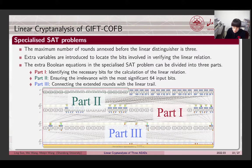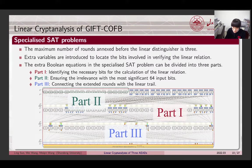We create a specialized SAT problem targeting the conditional linear trail. To begin with, given that GIFT-128 achieves full diffusion after 4 rounds, we conjecture the maximum number of rounds appended before the linear distinguisher in the attack is 3. Regarding the 3 rounds extended before the linear approximation, we introduce extra variables to locate the bits involved in verifying the linear relation. According to the functionality, the extra Boolean equations in the specialized SAT problem can be divided into 3 parts. The first part identifies the necessary bits for the calculation of the linear relation. The second part ensures the irrelevance with the most significant 64 input bits. The last part connects the extended rounds with the linear trail.